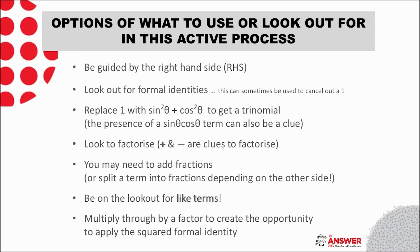So here is our list. It is quite long but all necessary, so remember to take notes as you listen. The first on the list is to use the right hand side to guide you. Things like noticing if the right hand side is a fraction or if it is one or two terms or which ratios it contains. The next is to be on the lookout for the formal identities, the tan identity as well as the squared identity.